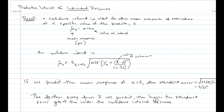This is hopefully a short video on calculating prediction intervals for an individual response. First, recall that a confidence interval is used for the mean response of observations at a specific value of the predictor X. Confidence intervals are for the mean or average response.